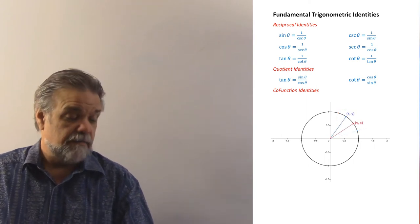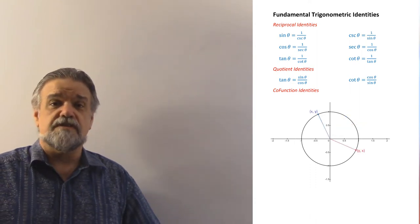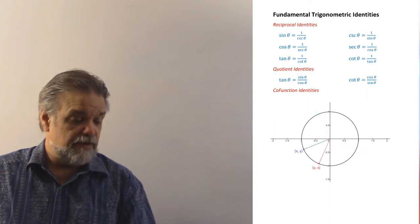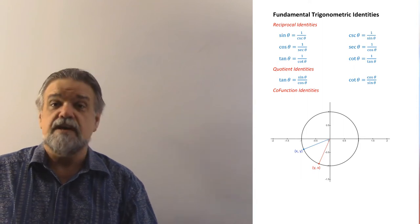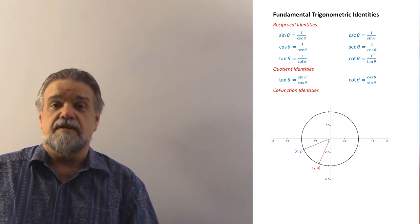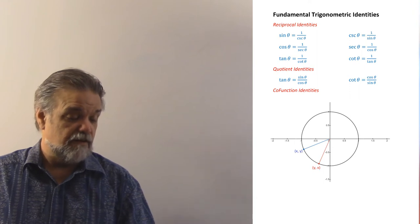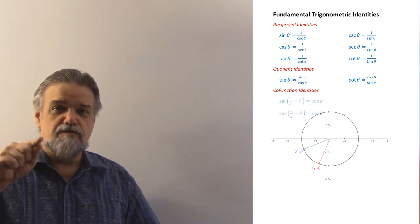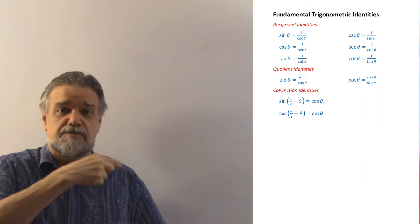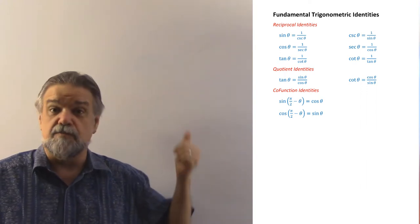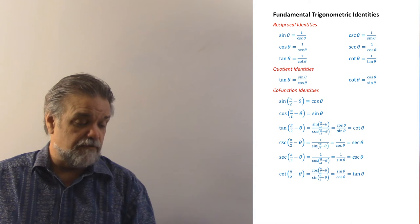This is true for acute angles in the first quadrant, but it's also true for angles in the second, third, and fourth quadrants. In every case, the sine of theta equals the cosine of pi over 2 minus theta, and the cosine of theta equals the sine of pi over 2 minus theta. Those are two identities we know, and using the quotient and reciprocal identities with a little algebra gives us the rest of the co-function identities.